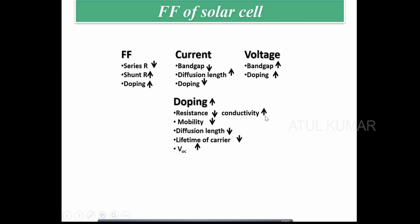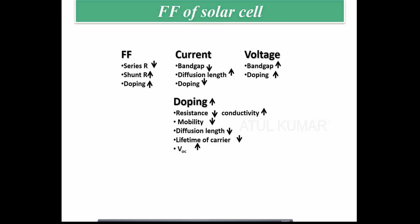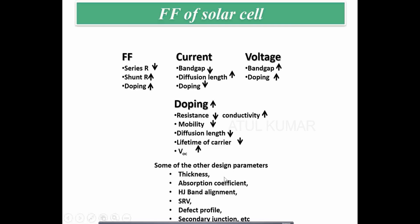If doping is high: resistance is low (good for conductivity), but mobility is lower affecting current, diffusion length is lower affecting current, and carrier lifetime is lower affecting current. However, built-in voltage is higher, meaning our voltage is higher. So doping is a trade-off point. There are many device design parameters — thickness, absorption coefficient, heterojunction band alignment, surface recombination velocities, defect profiles, secondary junctions — all impacting both current and voltage.